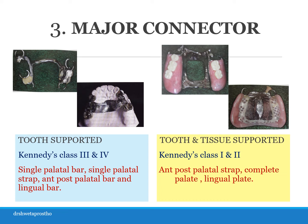A single palatal bar or single palatal strap will be used for class 3 cases in the maxillary arch, and a lingual bar major connector can be used in the mandibular arch. For class 4, we can use a double palatal bar or horseshoe or U-shaped major connectors. For distal extension RPDs — Kennedy's class 1 and class 2 — more tissue coverage is needed, so the anterior-posterior palatal strap or complete palate coverage in the maxillary arch will be preferred. A lingual plate major connector can be given in the mandibular arch to provide more support from the lingual mucosa.